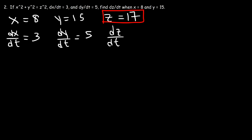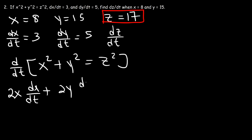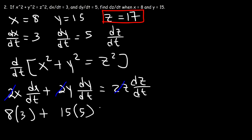So let's calculate dz dt when z is positive 17. So first, we need to differentiate both sides of this equation with respect to time. The derivative of x squared is 2x and then times dx dt. And for y squared, it's going to be 2y times dy dt. And then z squared, 2z times dz dt. So notice that we can divide each term by 2. So basically, we can get rid of the 2. And now, plug in what you know and solve for the missing variable. So x is 8 and dx dt is 3. y is 5 and dy dt... Actually, y is 15 and dy dt is 5. z is 17. So let's calculate dz dt.